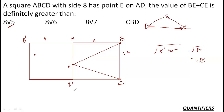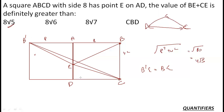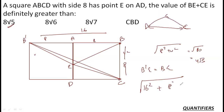I construct an identical square above the original. Let B' be the reflection of B into that square. Then B'E = BE because the figure is symmetric. Now the problem reduces to: what is the minimum distance from B' to C? It must be a straight line. That straight line spans 16 vertically and 8 horizontally, so the length is √(16² + 8²) = √(256 + 64) = √320 = 8√5. So 8√5 is confirmed as the minimum.